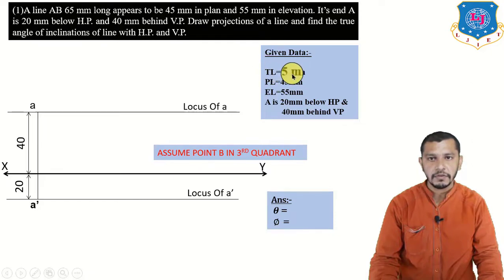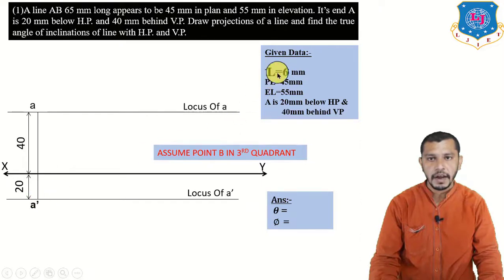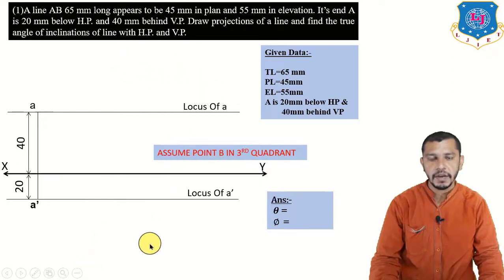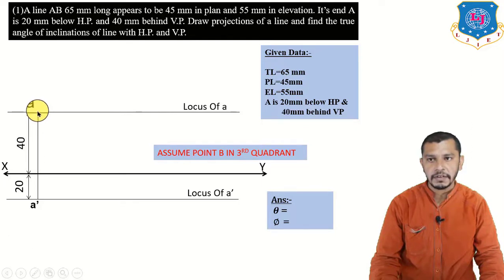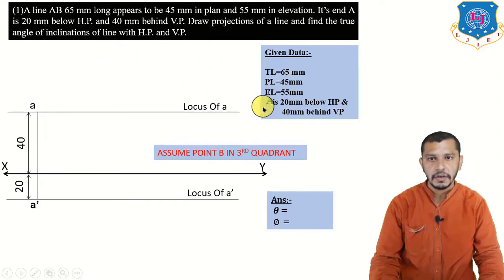True length is 65 mm. We can draw true length from A and A-dash, but theta and phi are required, or the locus of B and B-dash are required — which are not given. So we cannot draw true length right now. Similarly, plan length from A requires a beta angle or the locus of B, which we also don't have.